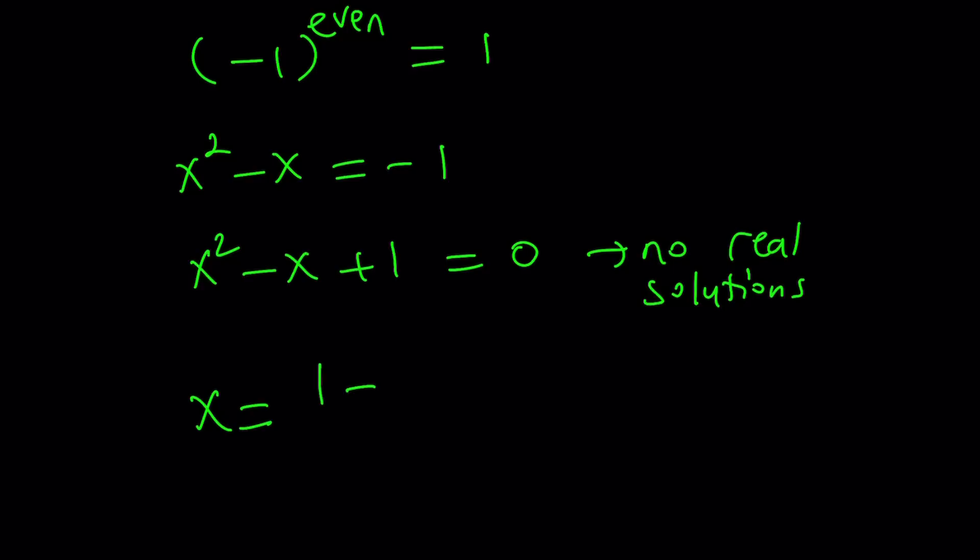x equals negative b, same way, plus minus the square root of b squared minus 4ac. Let's go ahead and do it mentally this time. 1 minus 4, that's negative 3, which gives us square root of 3 times i, the imaginary unit, divided by 2. So these are the solutions.